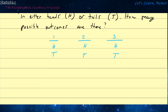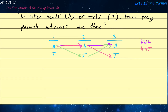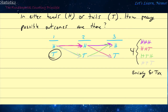One possible outcome is heads on the first, heads on the second, and heads on the third — HHH. We could also get heads, heads, tails — HHT. Or heads, tails, heads — HTH. Similarly, we have four outcomes starting with heads and four outcomes starting with tails, meaning the total number of outcomes is equal to eight.